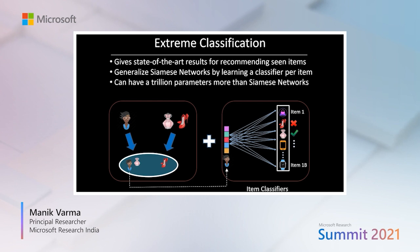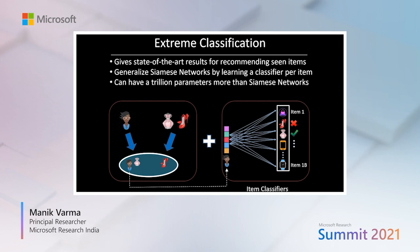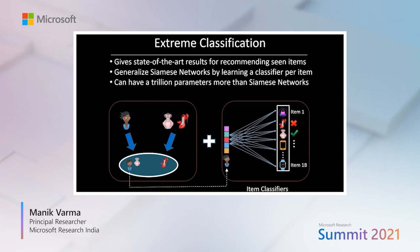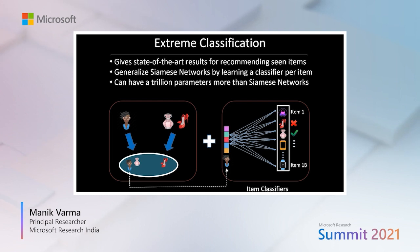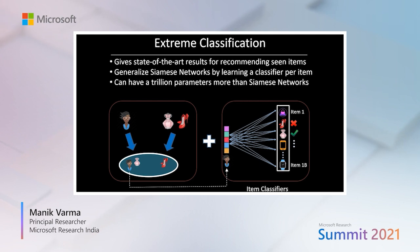This can lead to significant accuracy gains, because if you had a billion items during training embedded in a thousand-dimensional space, then your extreme classifier would have a trillion parameters more than your Siamese network, even though your Siamese network might have been based on the largest BERT or GPT-3 variant. Of course, this gives rise to some of the largest training and inference problems in AI. For example, where are you going to get the terabyte of RAM needed to store your model, not to mention the RAM needed to store the gradients, momentum, etc. Similarly, even if it were to take you just a millisecond to evaluate one of these item classifiers, it would take you more than 10 days to make recommendations for even a single user, and training would take months if not years.